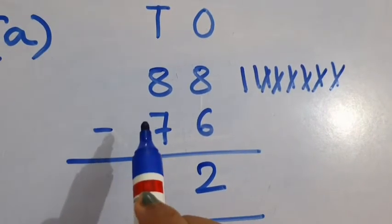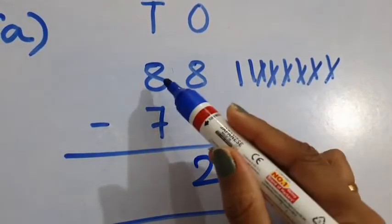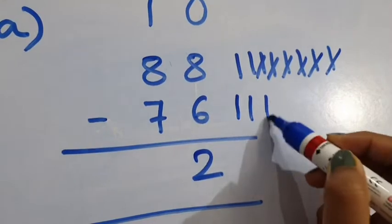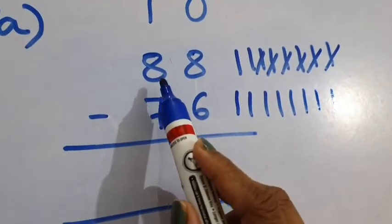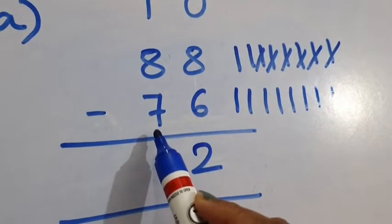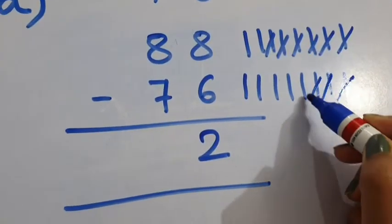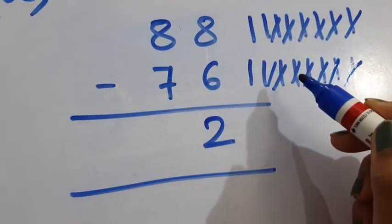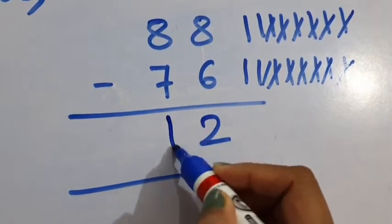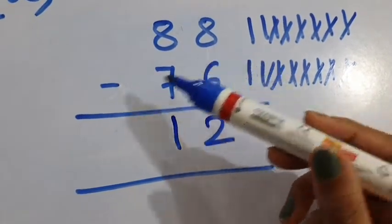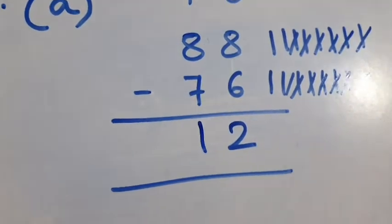Now see the 10's column. The numbers given are 8 minus 7. So we have to draw 8 lines. Out of these 8 lines, we have to remove 7 lines. So cut 7 lines. We can see only 1 line is left. So we will write 1 in the answer column. So 88 minus 76 is equal to 12.